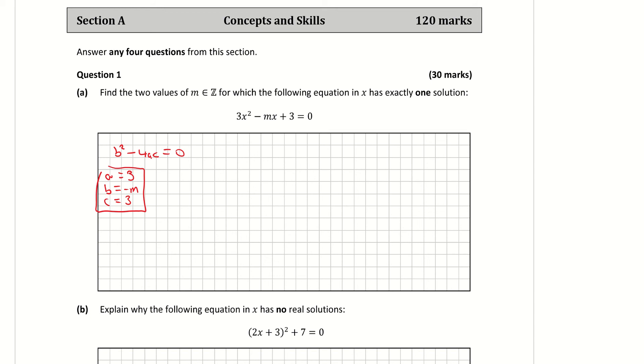I just fill those in now, so that's giving me b², which is -m all squared, minus 4 times a times c, which is 3, that's equal to 0. -m squared is m². Minus 4 times 3 times 3 is 36, equals 0. Add 36 to both sides becomes positive 36. To get m on its own, it's the square root of 36, and the square root of 36 is plus or minus 6. The question wanted us to find the two values of m, so that's positive 6 or negative 6.